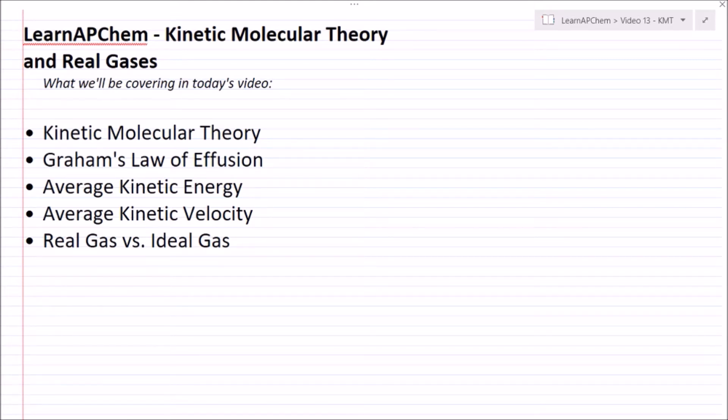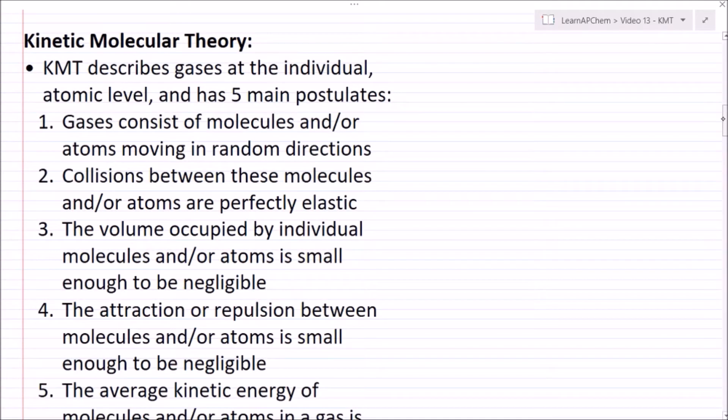Alright, so let's first talk about kinetic molecular theory, KMT for short. This describes gases at the individual atomic level. So PV equals nRT describes gases from a more macro level, but KMT talks about atoms at the molecular standpoint, like individual atoms.